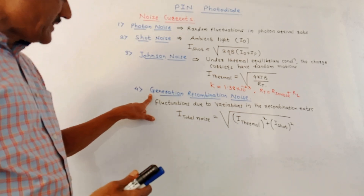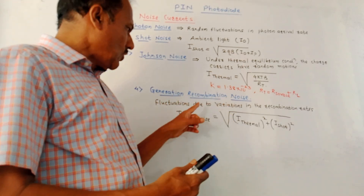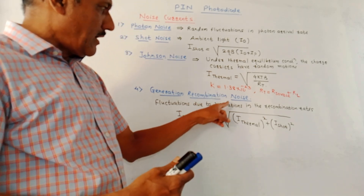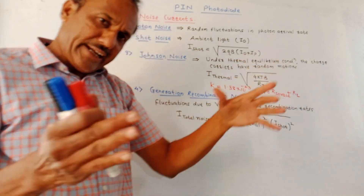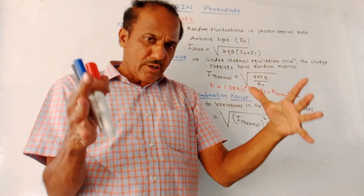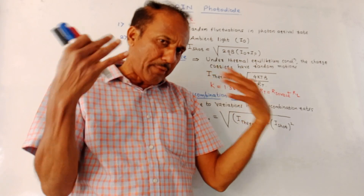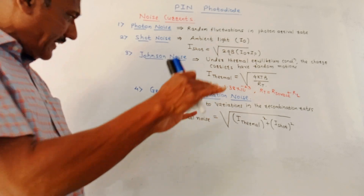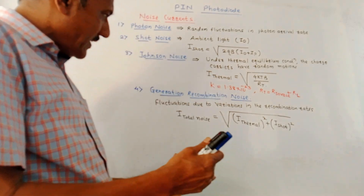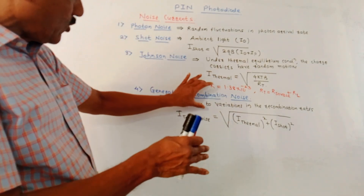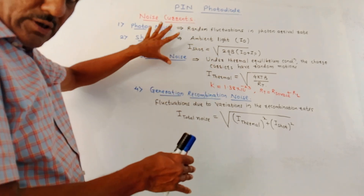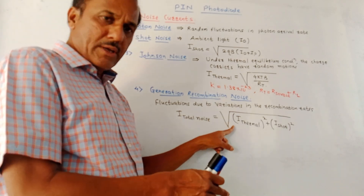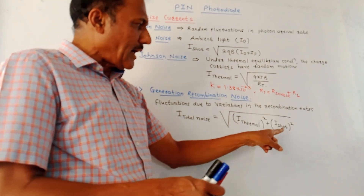The last type of noise is generation-recombination noise, due to fluctuations in the recombination rate of electron-hole pairs. In simplified terms, generation-recombination noise is the combination of thermal noise and shot noise, given by: I_total = √(I_thermal² + I_shot²).